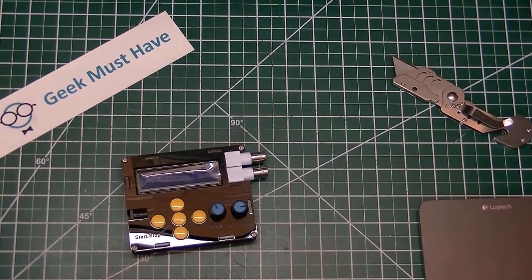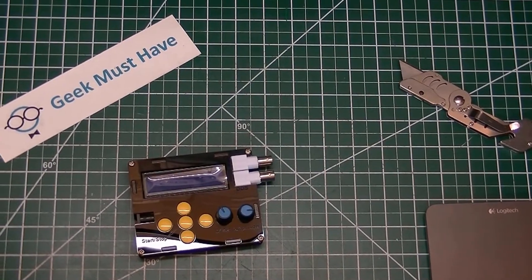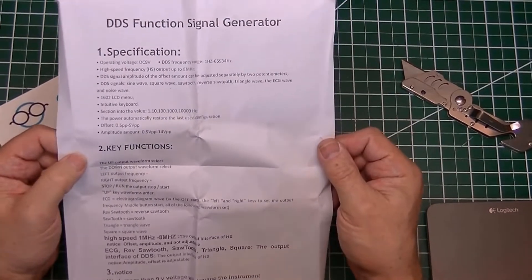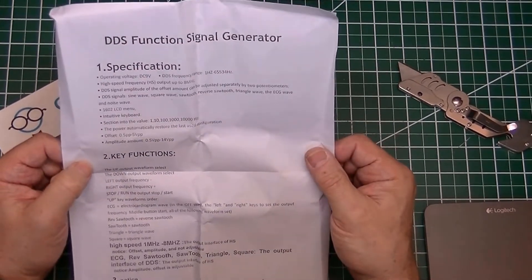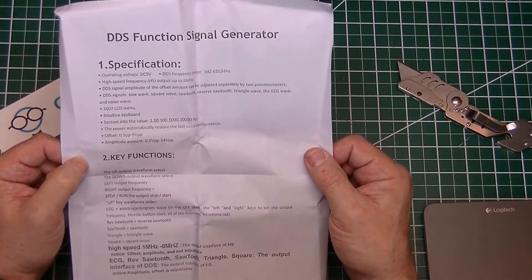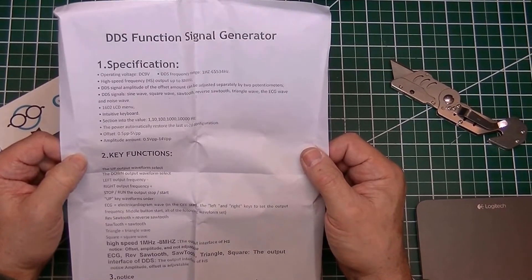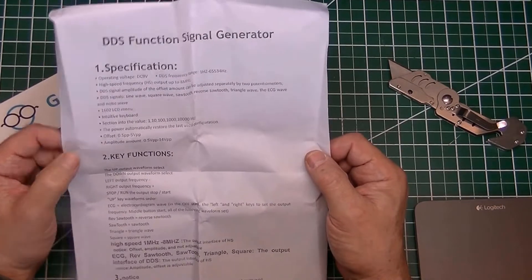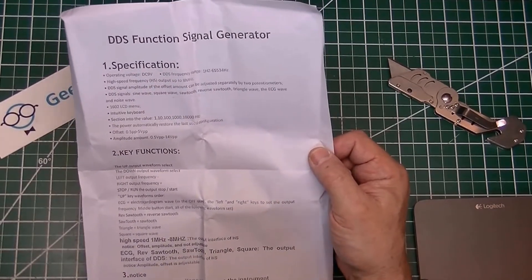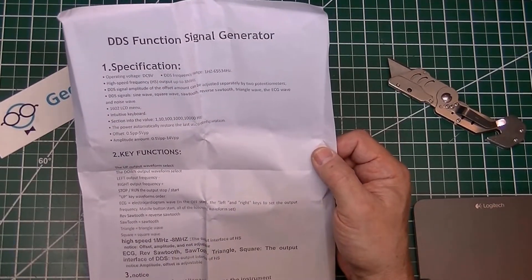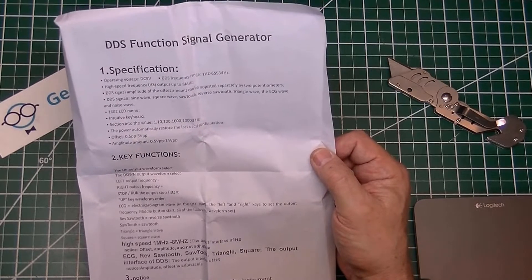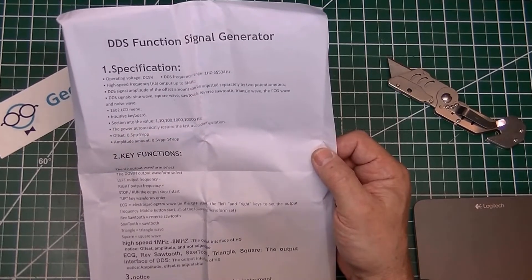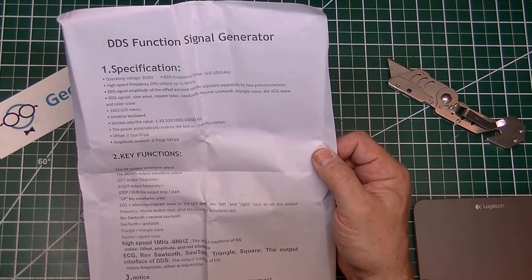We open the instructions. Wonders never cease, it is written in English. It's a DDS function signal generator and it even looks like proper English. Operating voltage is 9 volts DC. Frequency range on this is from 1 Hertz to 65,000 Hertz, not a very big frequency range. High speed frequency is up to 8 megahertz, which is better but still not great.